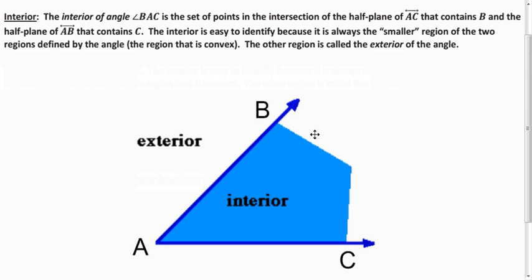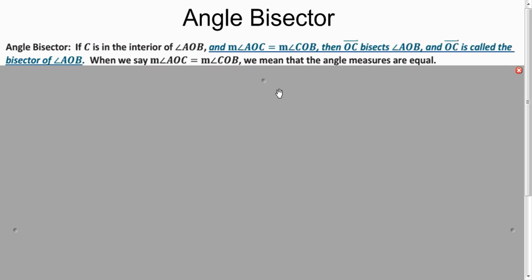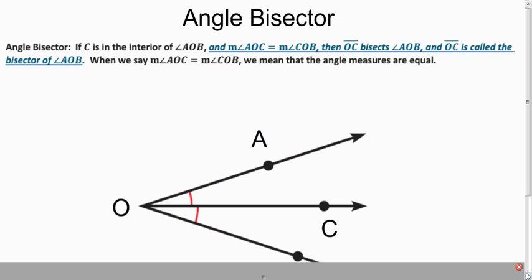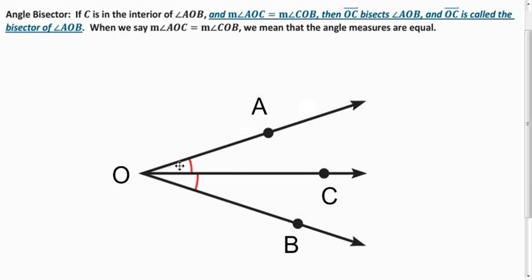Angle bisector: what does bisect mean? Well, bi means two and sect means cut, you know, in sections. So cutting into two sections that are the same size.